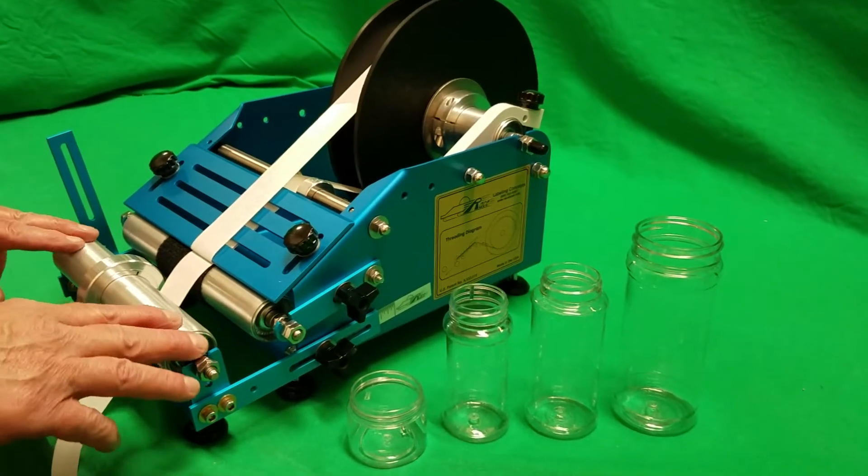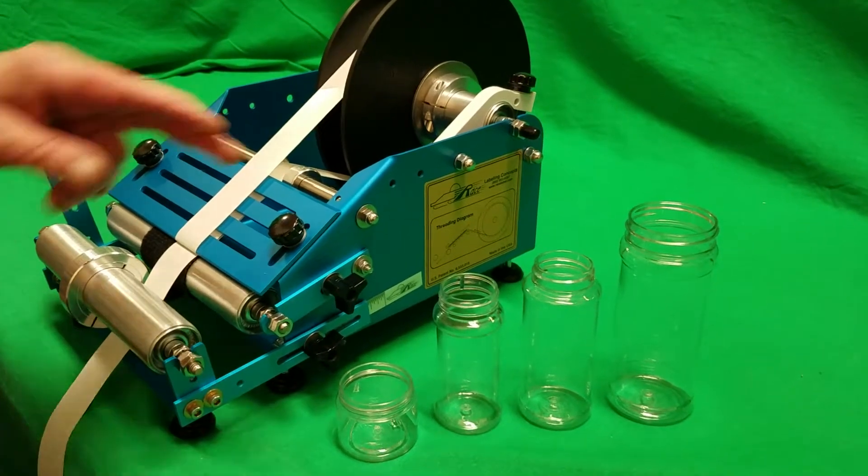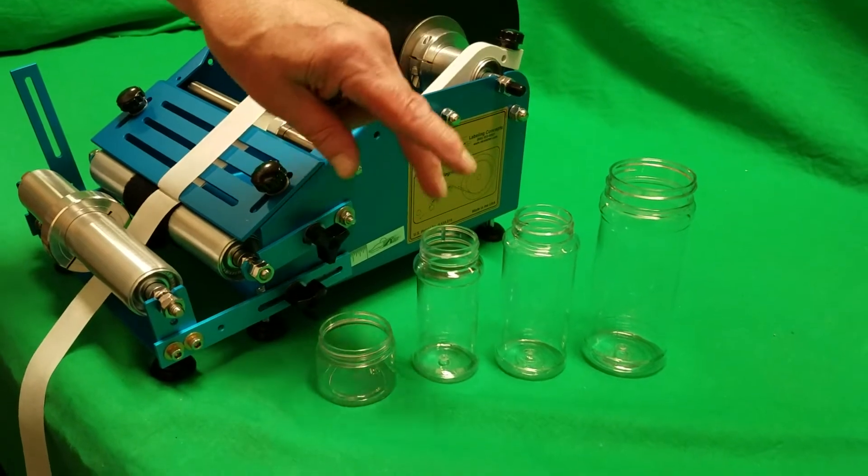This machine is the Race Junior machine. We're going to be applying labels to four different PET jars.